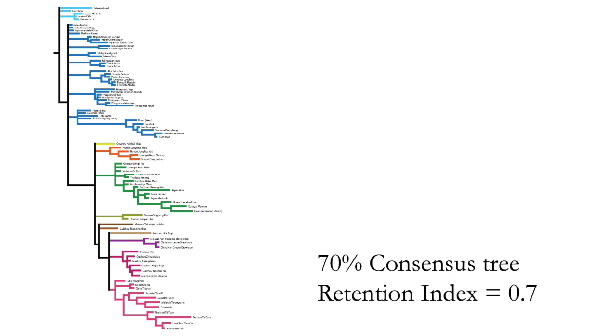A standard measure of how well a phylogeny such as this reproduces the data is the retention index, which varies in principle between 0 and 1. This tree has a retention index of 0.7, which is quite similar to that for many biological data sets, and suggests that we're not wrong in thinking that these looms are a related group that evolve together.